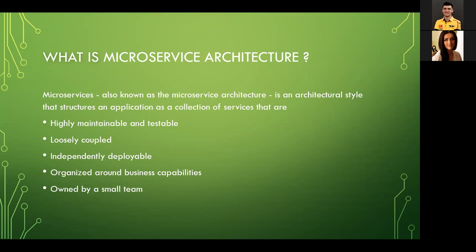Microservices should be independently deployable — ideally, deploying one microservice shouldn't require deploying three others. They should be organized around business capabilities, which we'll cover more in the next slides. And they should be owned by a small team — not absolutely required, but it would be nice, meaning it shouldn't require a really big team to handle it. These are the main characteristics, and I bet you already see it's something really appealing to try on your projects.